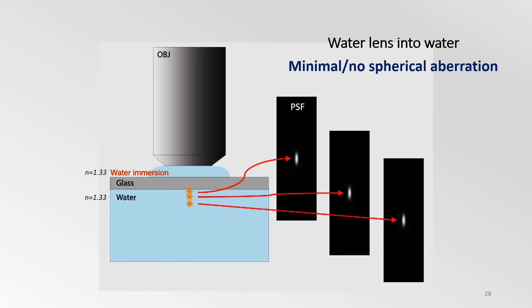However, if a water immersion lens is used on the same sample, spherical aberration is averted due to refractive index matching. So as you image deeper into the sample, resolution is barely affected.